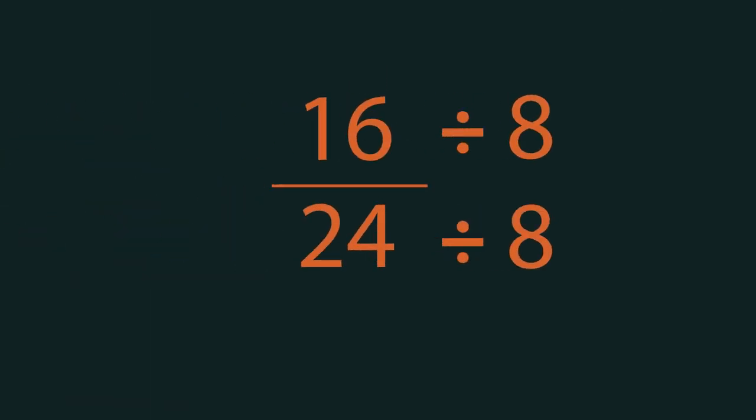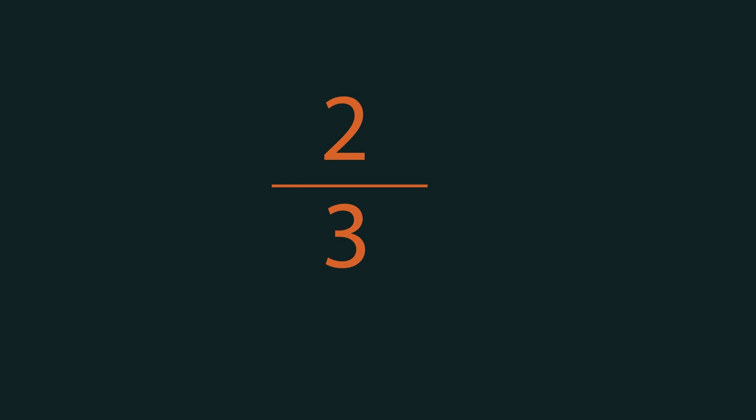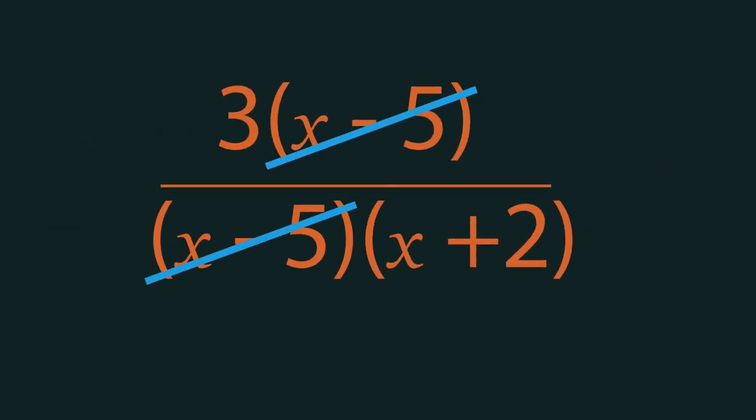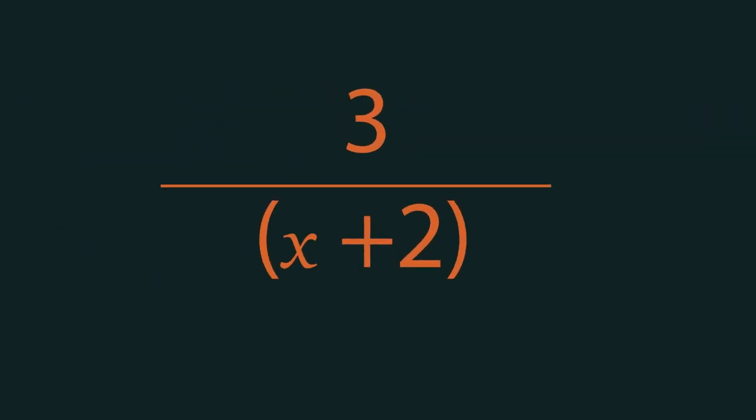In part 2 we'll look at solving. We can simplify by cancelling the numerator and the denominator equally, exactly as we do with numerical fractions. To simplify fully we may need to factorise either the numerator or the denominator or both. It might require factorising into one bracket or maybe even factorising a quadratic into two brackets.